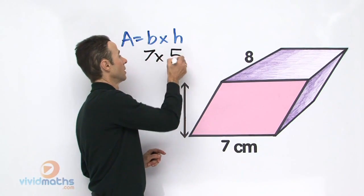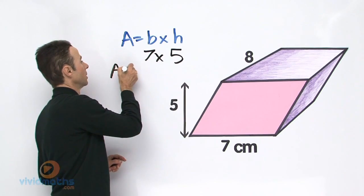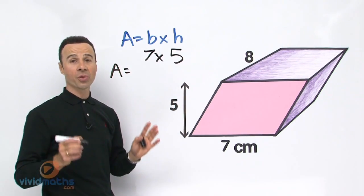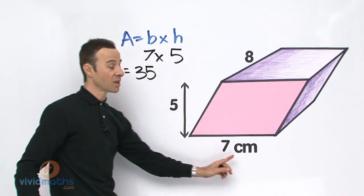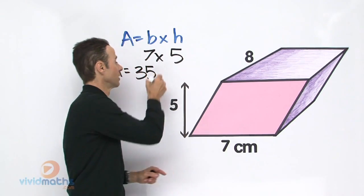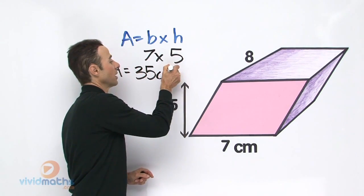7 times 5 is 35, and the units are in centimeters and that is squared.